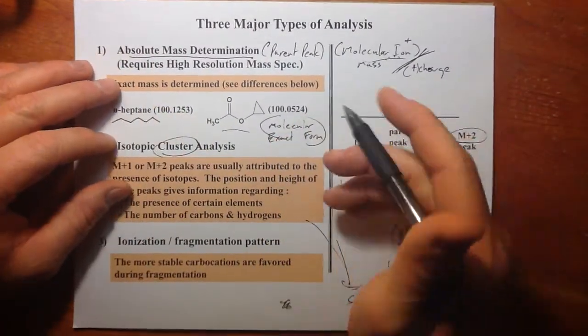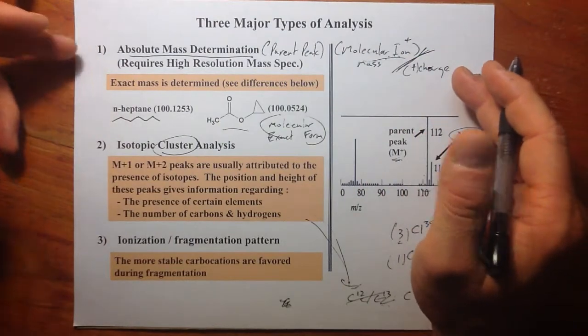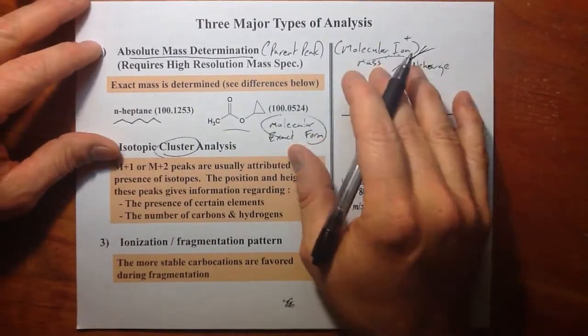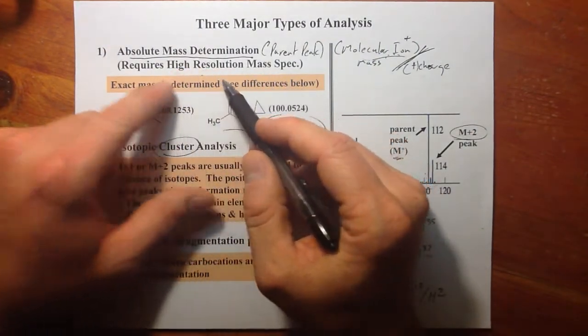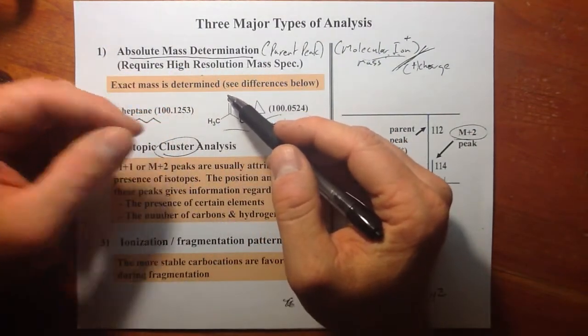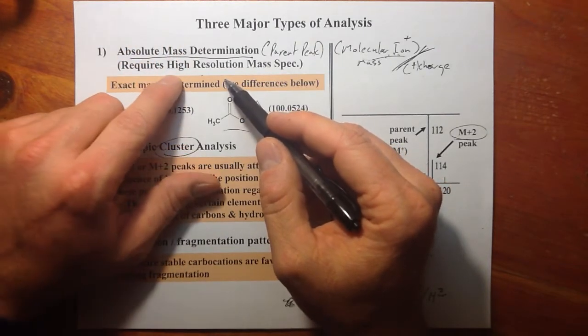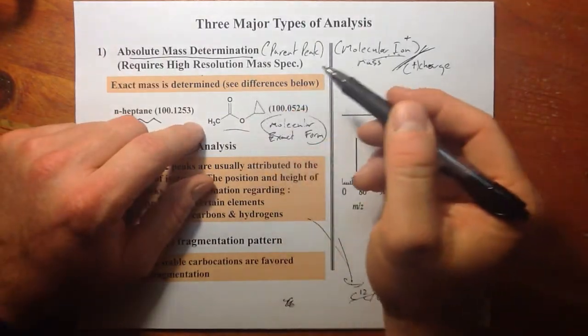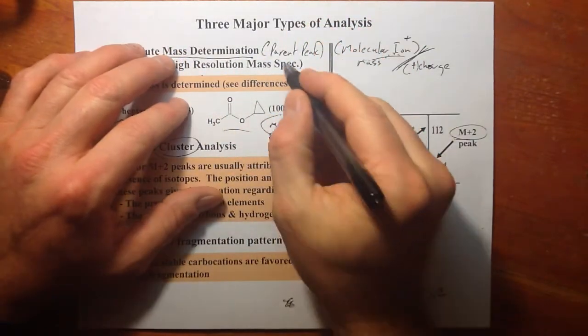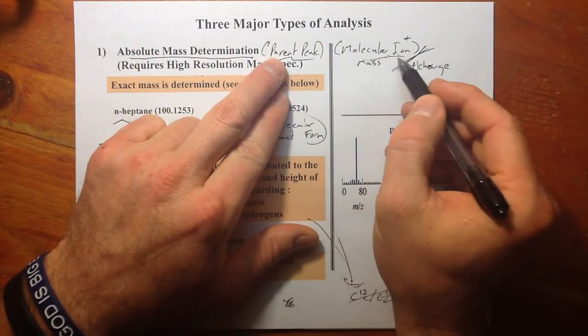So what can we do with it? There's kind of three things. One, the most expensive but very powerful method of analysis, is to do high resolution mass spectrometry. It requires more sensitivity, more precision. But if we can exactly determine the mass for the molecule minus an electron, so there's been no fragmentation, that's where it works best, where we have the parent peak or what's called the molecular ion.